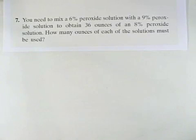You need to mix a 6% peroxide solution with a 9% peroxide solution to obtain 36 ounces of an 8% peroxide solution. How many ounces of each of the solutions must be used?